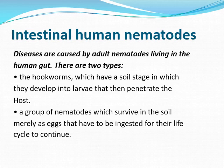إذاً النوع الأول من الديدان يتحول ويتكاثر عن طريق larvae in the soil which is the infective stage. والنوع الثاني يتكاثر عن طريق eggs بالديدان بشكل عام.